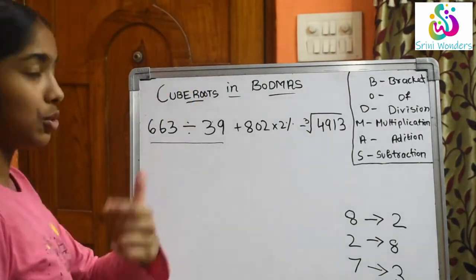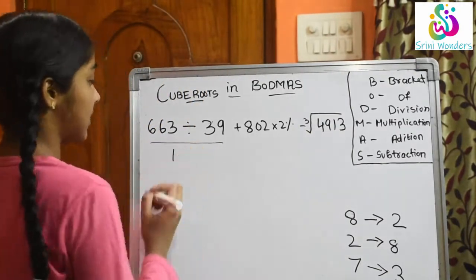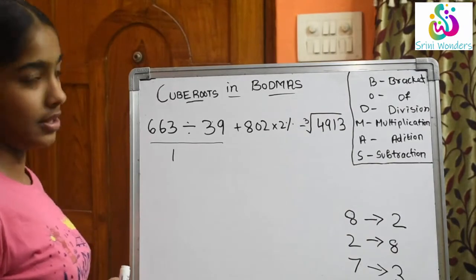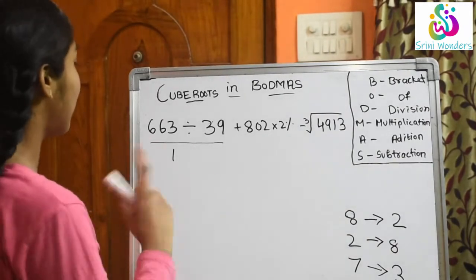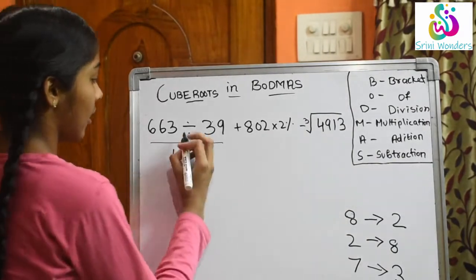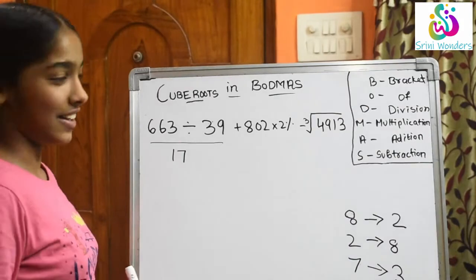So first let us do the division. The answer of 663.663 divided by 39 is 17.